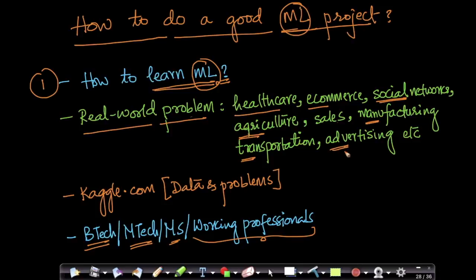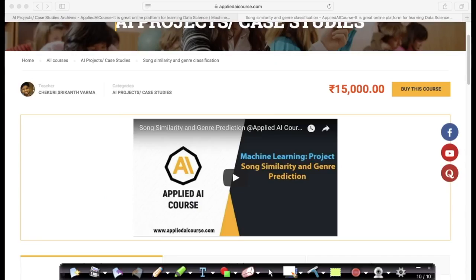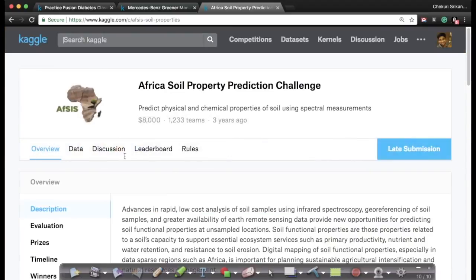If you want more problems, there is always Kaggle.com. Kaggle is an online repository of datasets, and also a place where data scientists compete — similar to programming competitions, but for data scientists and machine learning engineers. There are a lot of great datasets and problems on Kaggle for those who are interested.